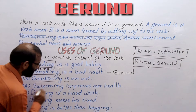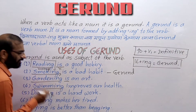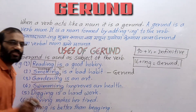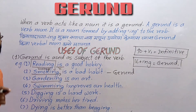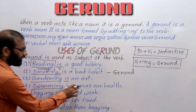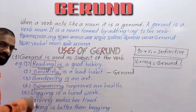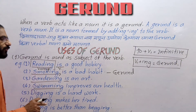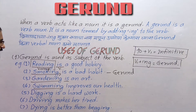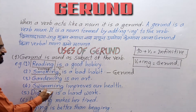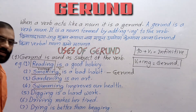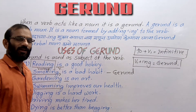'Swimming improves our health.' Swimming is gerund and 'improves' is the main verb. Swimming is used as subject of the main verb 'improves.' Again, 'digging is hard work' — khodakam karne kathin kama hai. Here 'digging' is the gerund used as subject.